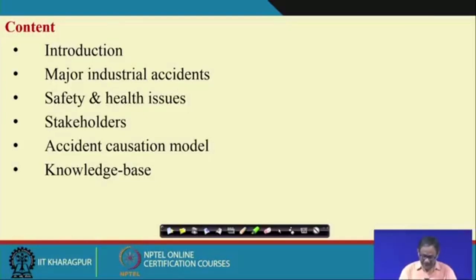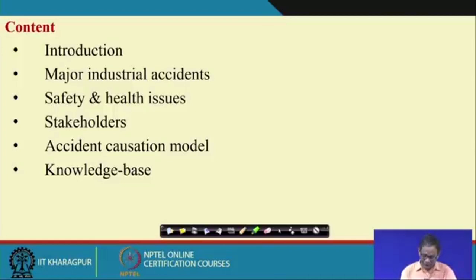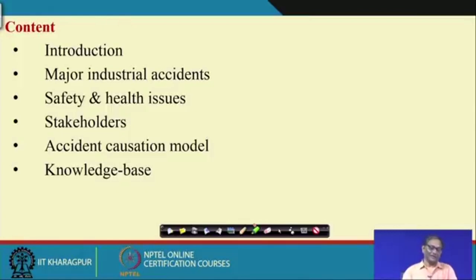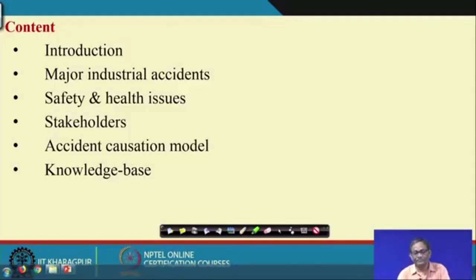Most of the information related to the figures, the past accidents, and the models are taken from publicly available internet sources and some from standard literature. In this first lecture, I want to give you what this subject is, why it is important, what is the relevance of the subject to industry and academia, and finally what will be the basic requirements to learn the subject, as well as a sketchy blueprint of what is in total industrial safety engineering.